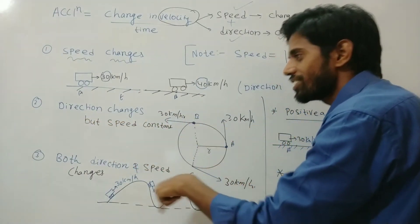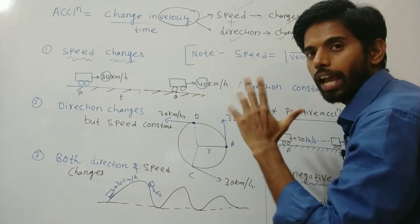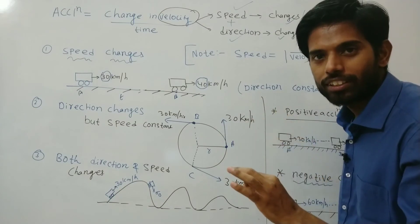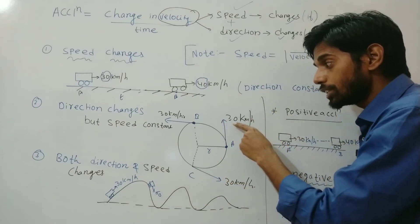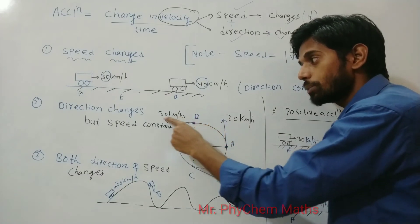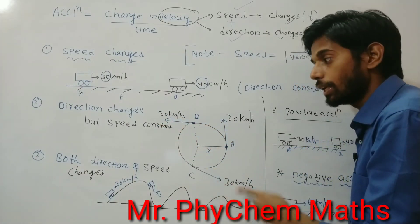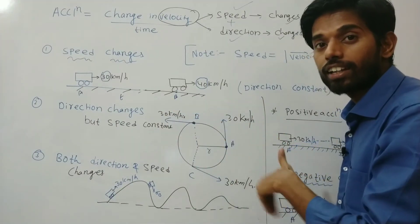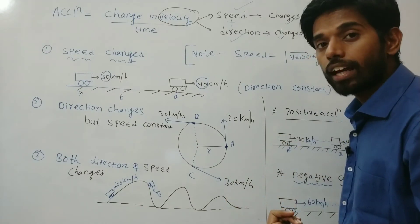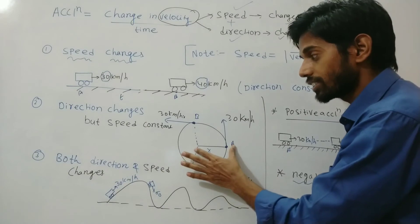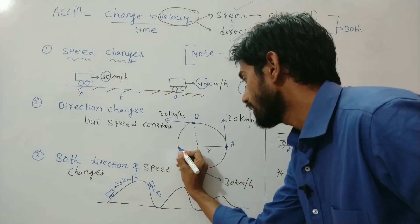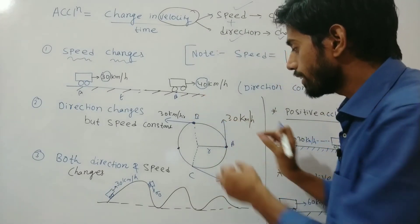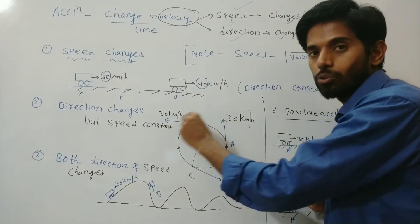Here you can see that direction is changing but speed is constant. Suppose any body is moving along a circular path with constant speed — the speed is 30 at point A, 30 at point B, and 30 at point C — but the direction is changing everywhere. To find direction at any point, draw a radius to the center and then draw a tangent perpendicular to that radius — that gives the direction of velocity at that point.